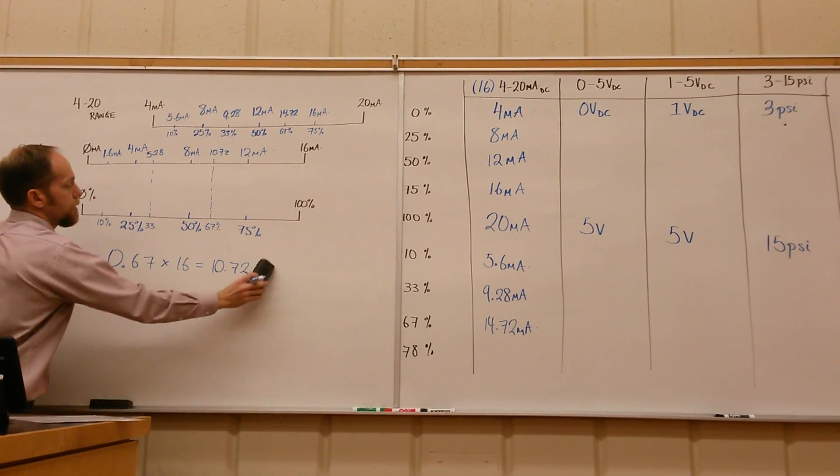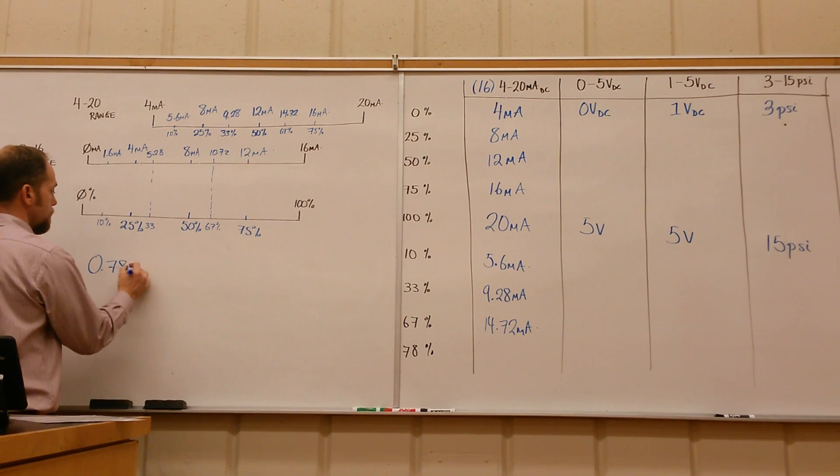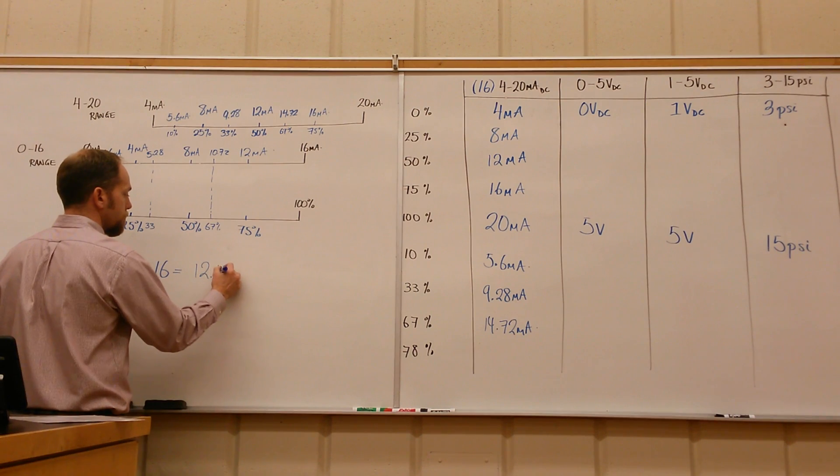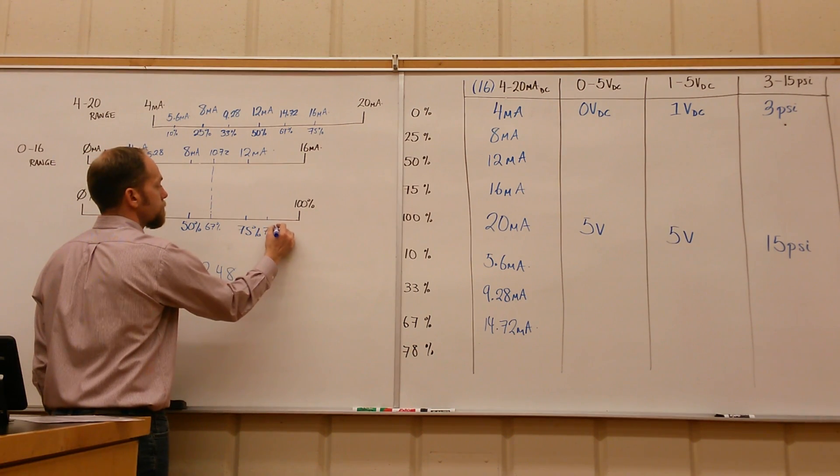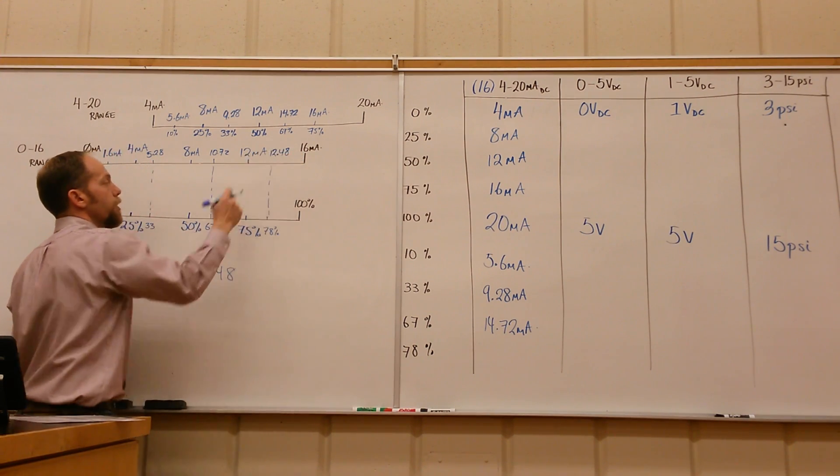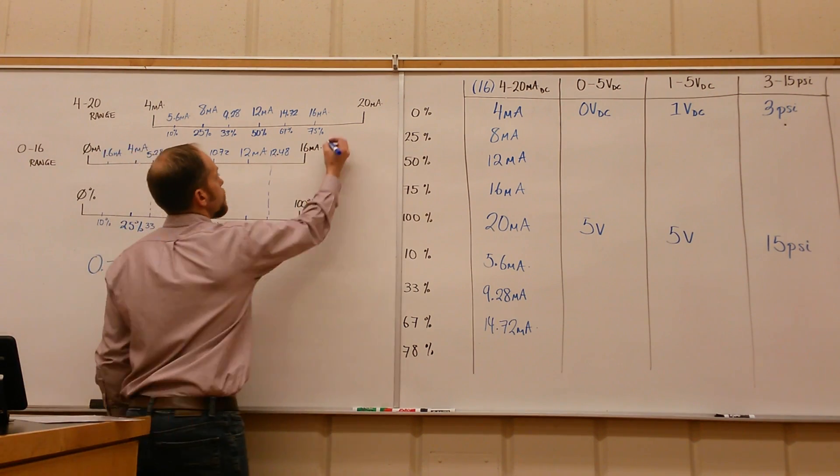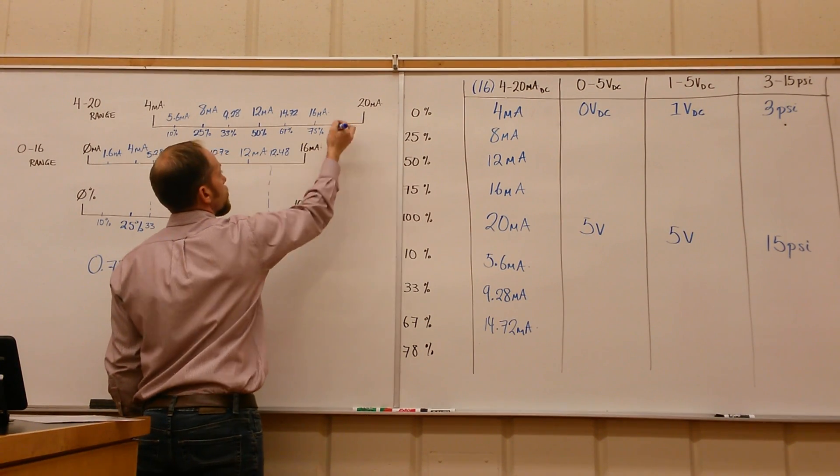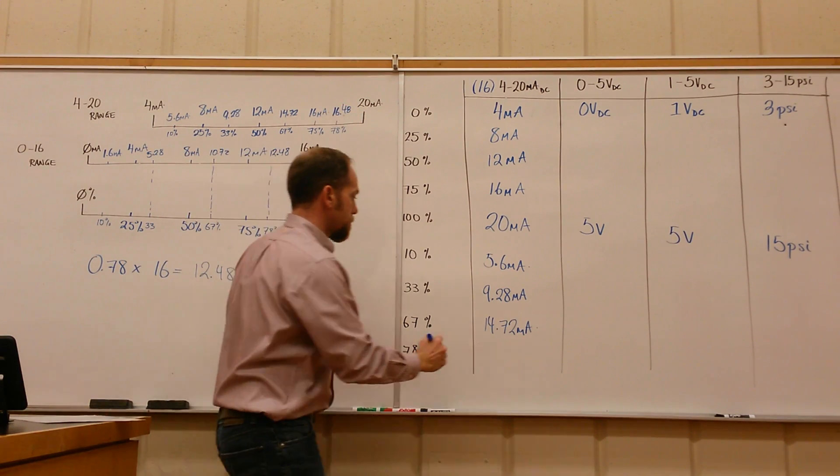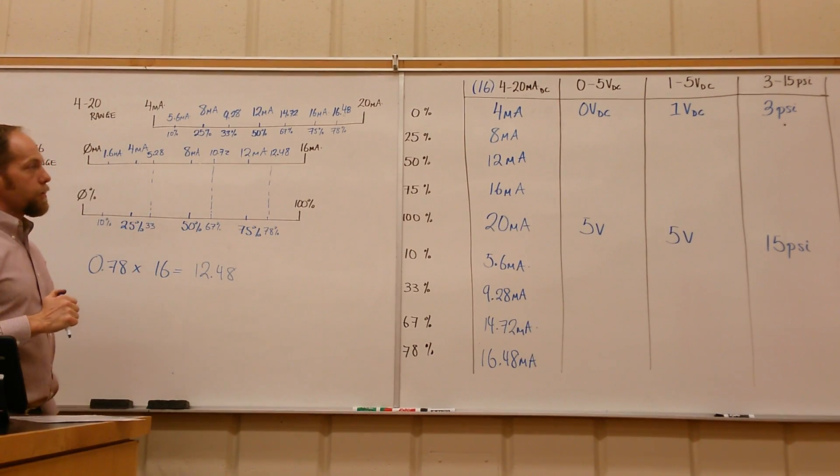And then finally 78. Well, 75 gave us 16. So we'll take 0.78 times our 0 to 16 range, and that gives us 12.48. So 78% gives you 12.48 milliamps, just above the 12 that we saw for the 75. Then we're going to add 4 to this guy, so 78% gives us 16.48 milliamps.